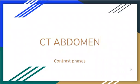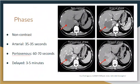In this video we're going to go through the CT of the abdomen and how to identify the different phases when contrast is going through the body. We're going to look at just this image here today and go through the non-contrast phase, arterial phase, portal venous phase, and delayed phase.